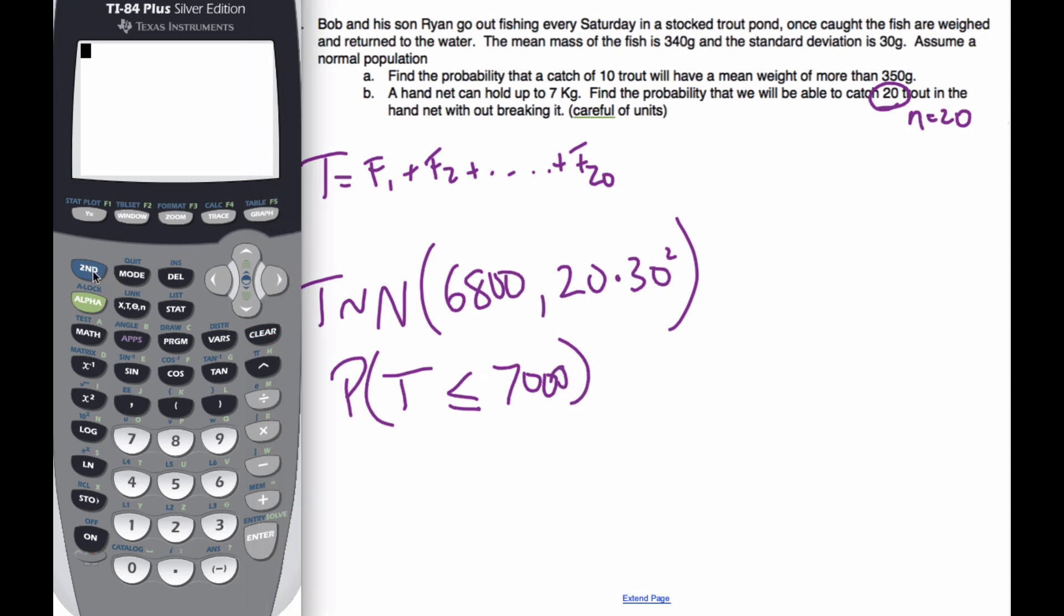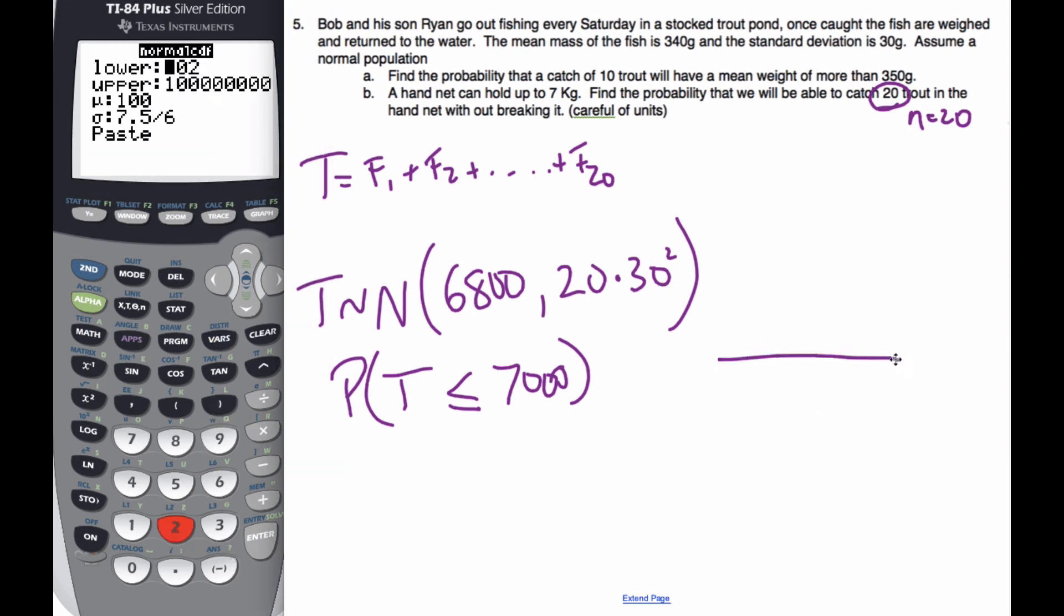So if I go to my calculator, my distributions, I go to my normal, my lower limit. If I think about the graph here, this time, here's my mean of 6,800, 7,000 is here. I'm looking for this side here.